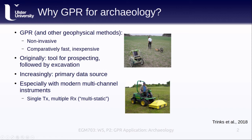One type of multi-channel system involves a single transmitting antenna and multiple receiving antennae — a so-called multi-static system. In the top image, we see someone using a single antenna. In order to map an area, we would have to move this antenna up and down each grid line that we want to survey. With a multi-channel system, we have multiple antennae, which means we can cover multiple survey lines in a single pass, which dramatically decreases the amount of time it takes for a survey and also increases the area that we can map.